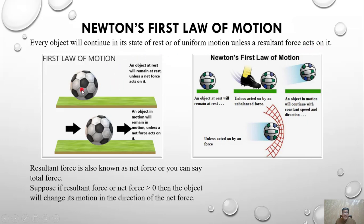If you see here, this football is at rest — it will remain at rest unless a net force or resultant force acts on it. And this football is in motion — an object in motion will remain in motion unless a net force acts on it. This football will not stop unless a net force acts on it, because it is already in motion.